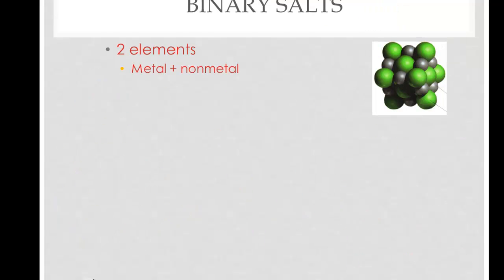Now again, binary salts are two elements, a metal plus a nonmetal, or a positive ion and a negative ion. And when they name them you should all be familiar with what NaCl is called. It's sodium chloride. More familiar as table salt as a common name.